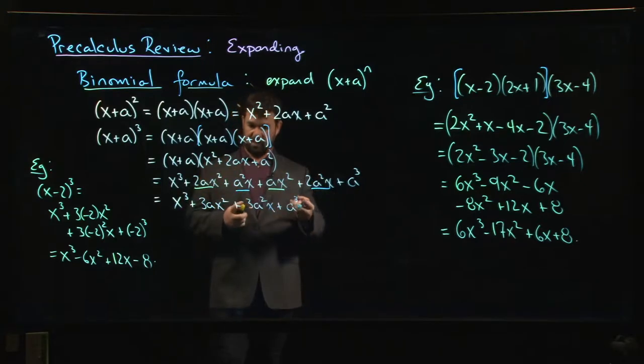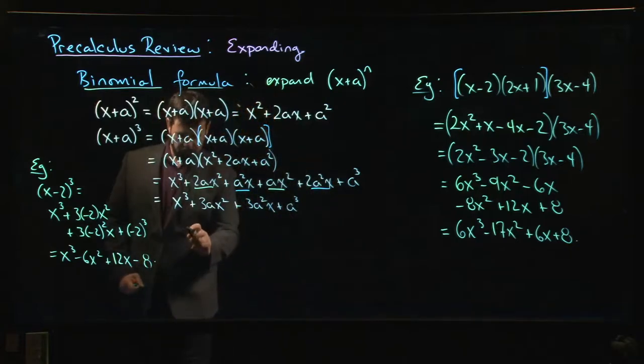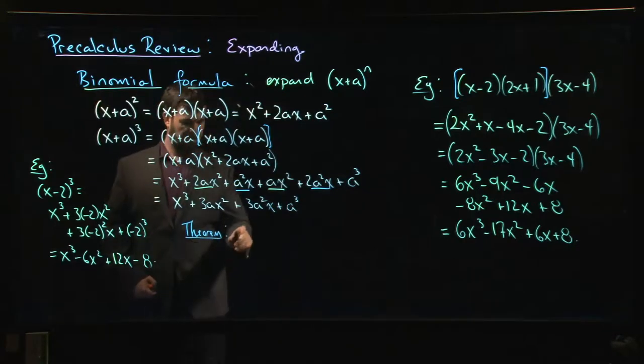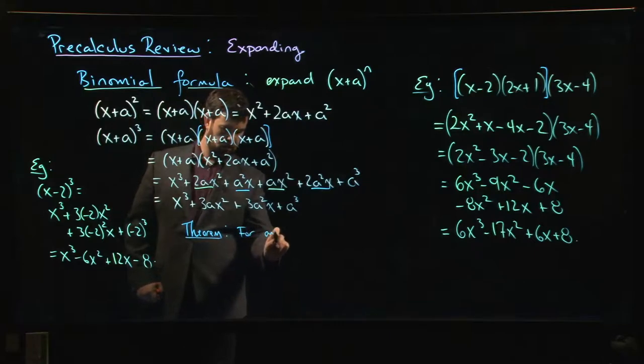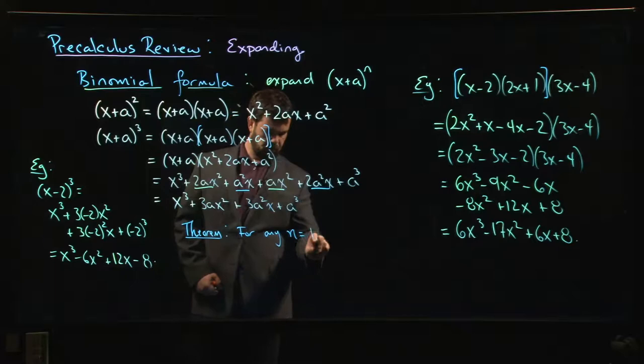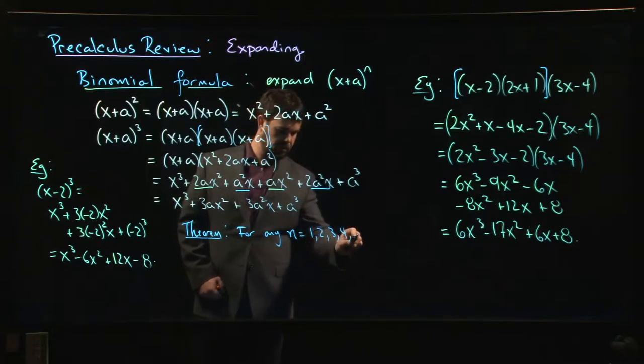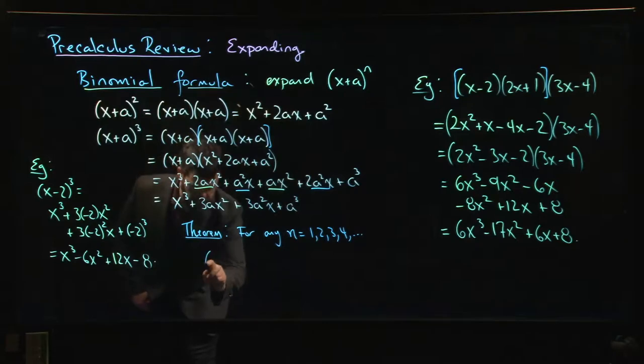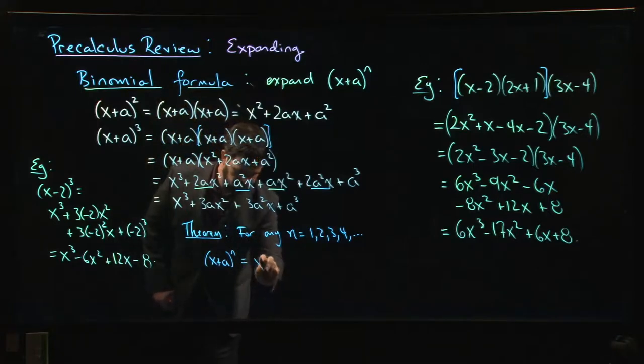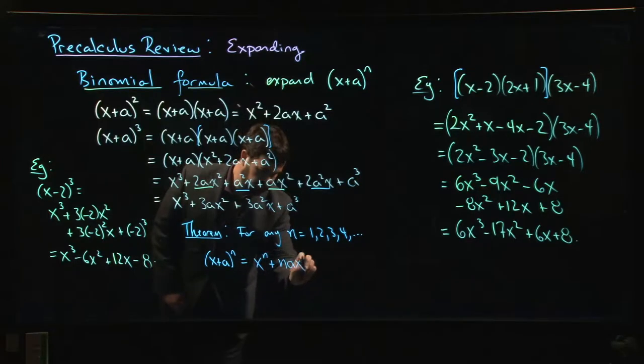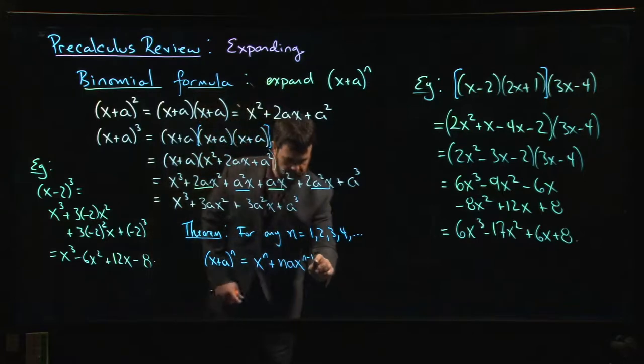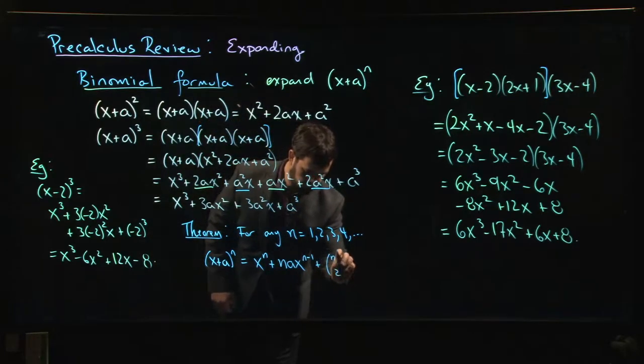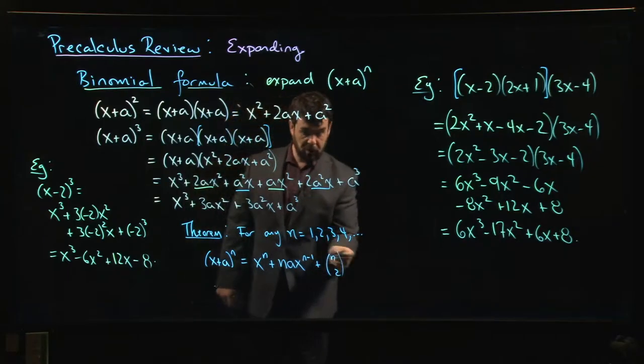In general, there's a theorem that says for any value of n—for 1, 2, 3, 4, any natural number—if I wanted to do (x + a)^n, it always looks like x^n plus n times a times x^(n-1).